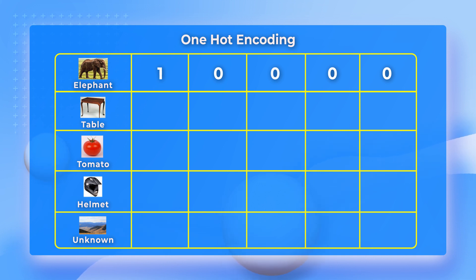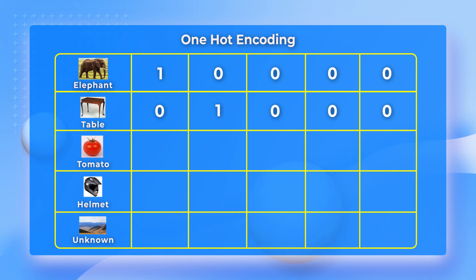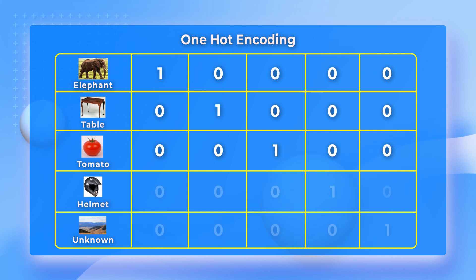We can represent the table class using 0, 1, 0, 0, 0. The second element is 1 and the rest are 0. Similarly, we can encode the tomato class as 0, 0, 1, 0, 0. And the pattern follows for encoding Helmet and Unknown.